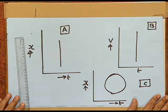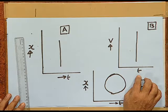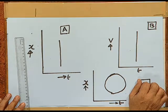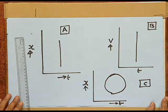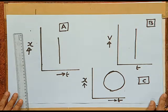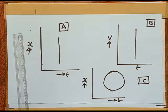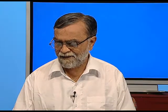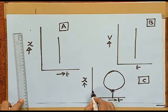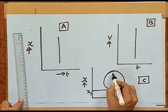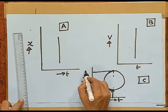In graph B, the variation of velocity as a function of time is parallel to the v-axis — meaning at a given time, velocity goes on changing. Is that possible? In graph C, the variation of position x with time follows a circular path. At any given time, the object would have two possible positions, x₁ and x₂. Can an object be in two places at the same time? These graphs are physically impossible.